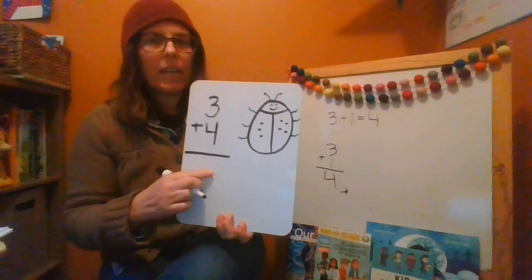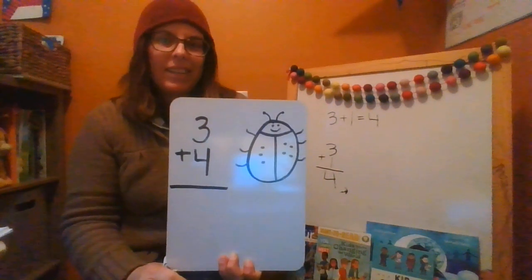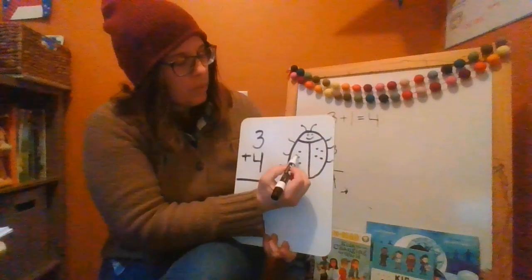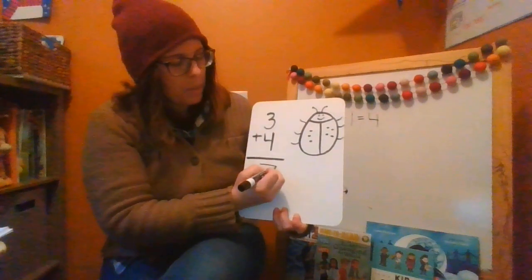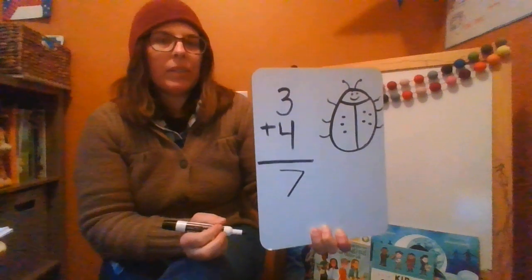And then to find out how much it equals, what should I do? Yeah, I should count all those dots. So let's count them. 1, 2, 3, 4, 5, 6, 7. And I'll put 7 down here under the line. 3 plus 4 equals 7.